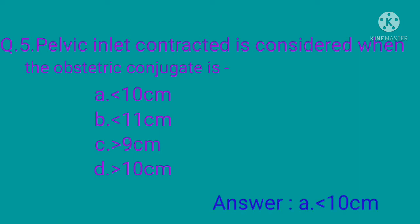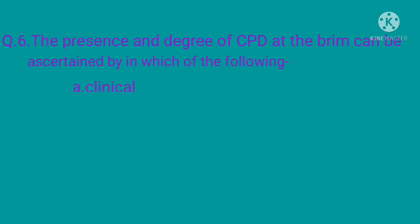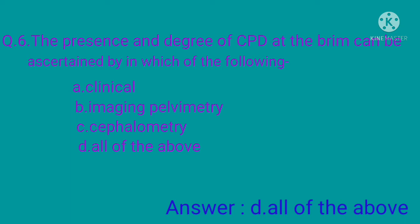Question 6: The presence and degree of CPD at the brim can be ascertained by which of the following? Option A: clinically by doing abdominal method and abdominopelvic method, option B: erect pelvimetry, option C: X-ray pelvimetry, option D: all of the above. The correct option is option D: all of the above.